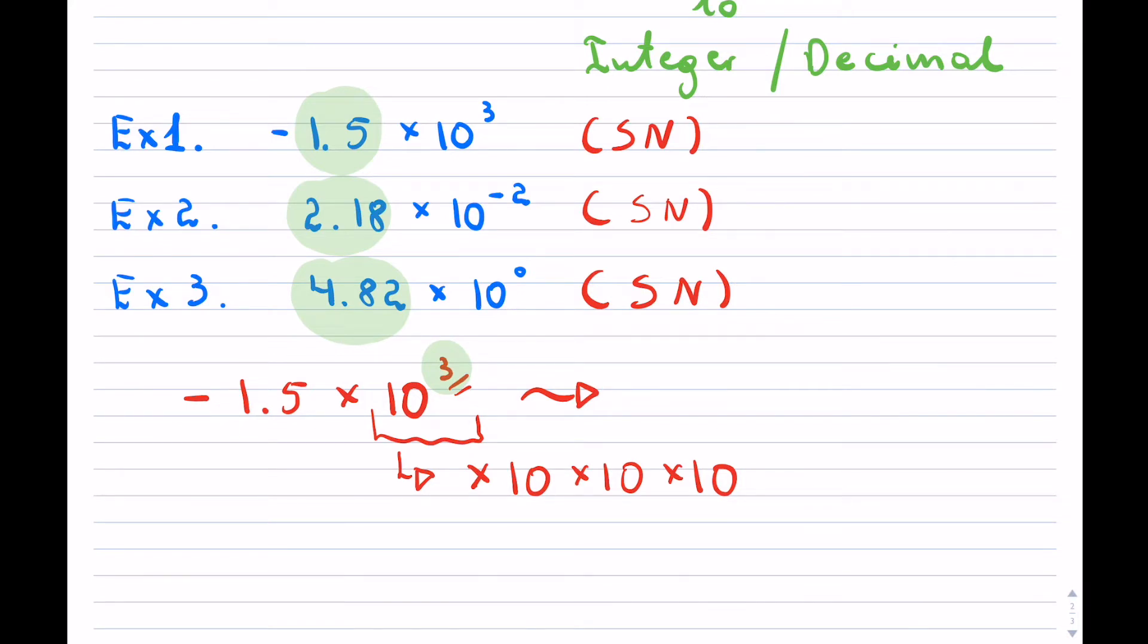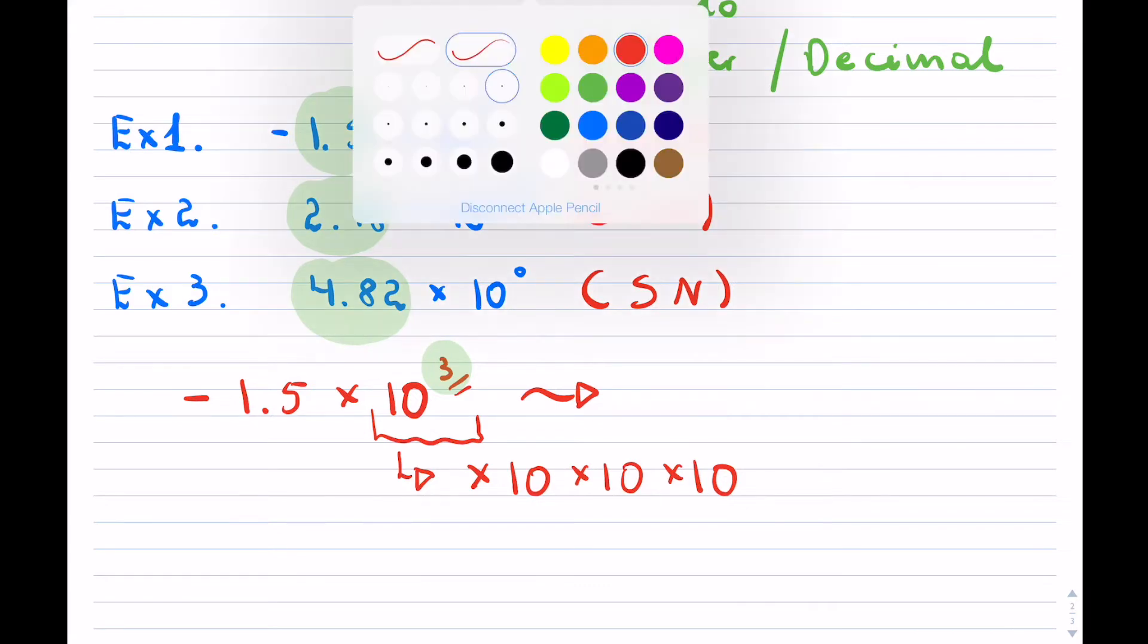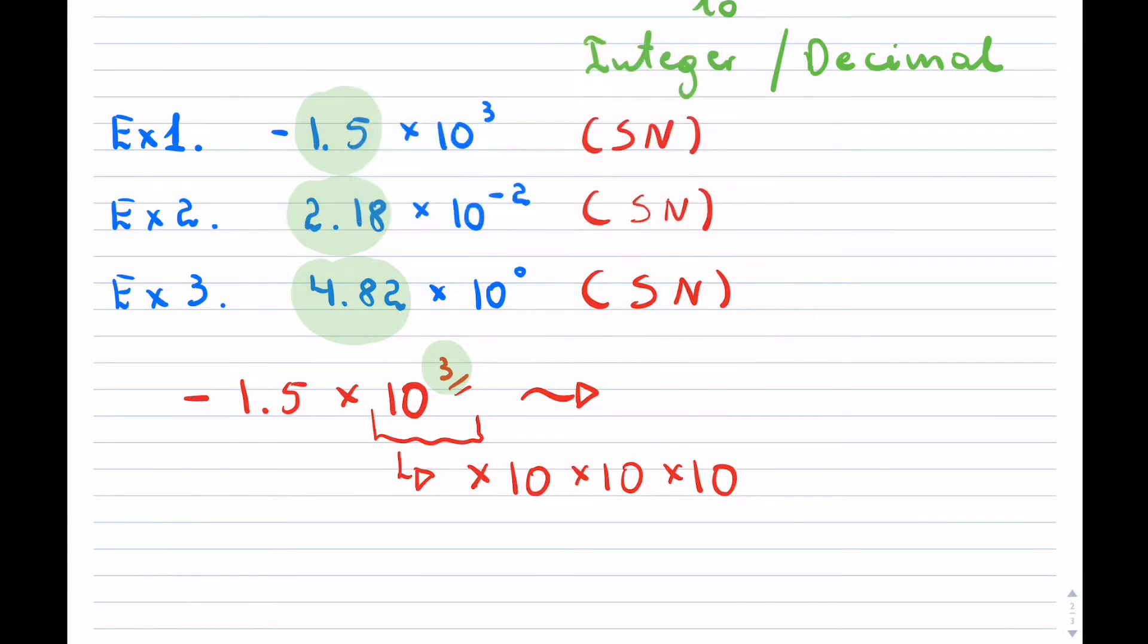Now if you're multiplying by 10, then all you're doing is you're shifting the decimal over. You're making the number bigger because it's a multiplication by 10.